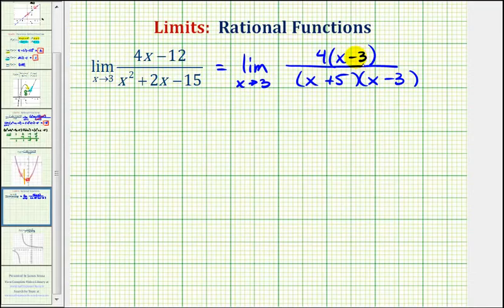Graphically, this means our function would have a hole at x equals positive 3. But this hole does not affect our limit. Which means we can go ahead and simplify out this common factor.